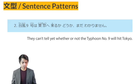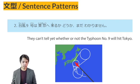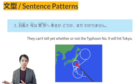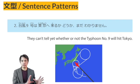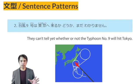Sentence Pattern No. 2: TAIFU KYUGO WA TOKYO WE KURUKA DOKA MADA WAKARIMASEN. This sentence pattern is using a question that doesn't have an interrogative as a component of another sentence. Take note that DOKA is used after the KA.